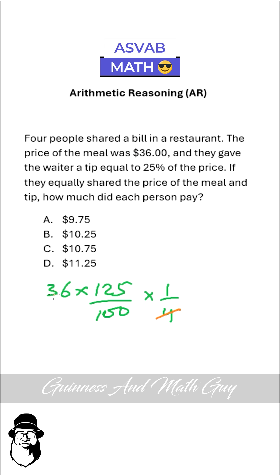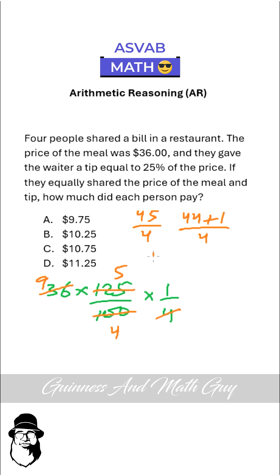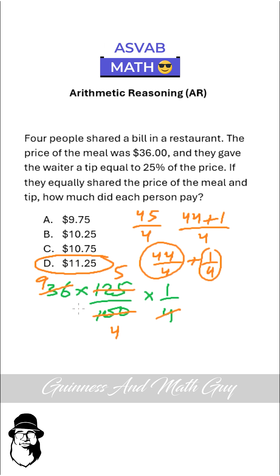Now 4 times 9 is 36. And here 25 times 4 is 100 and 25 times 5 is 125. On the upper side we have 9 times 5, that is 45, and below we have only 4. Now this 45 we can say it's 44 plus 1, right? And 44 over 4 plus 1 over 4: 44 over 4 is 11, and this quarter means 0.25. So 11.25 — that's our answer.